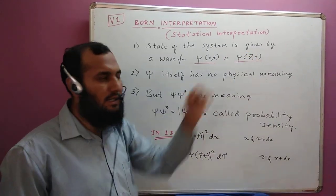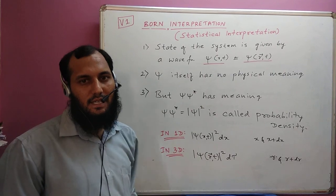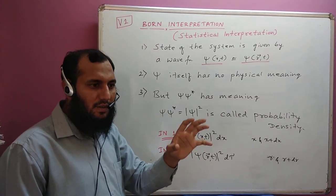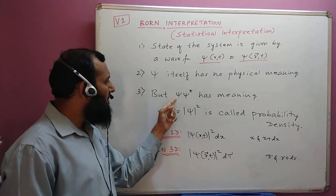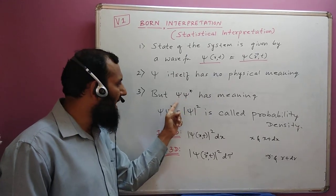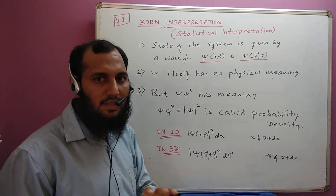The second thing is ψ itself has no physical meaning. ψ is a wave function, but that wave function is not having any physical meaning. But when we multiply ψ with its complex conjugate, that is ψ into ψ*, then there will be a meaning. What is the meaning of that one?